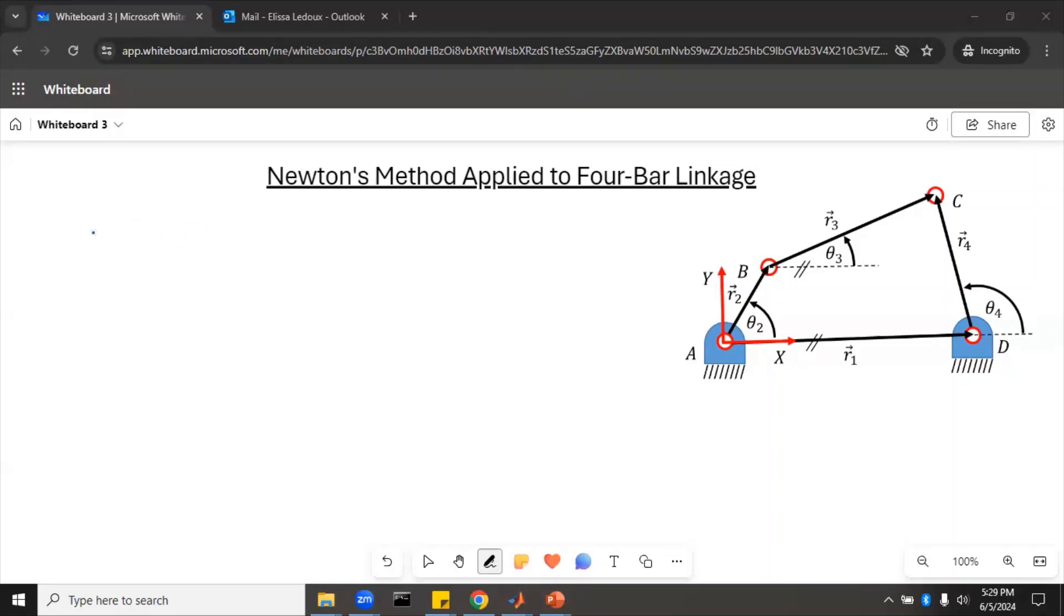So here, if we go around this loop, say we go around the loop clockwise, so just standard convention, we have this one on the left, R2, which is called the input, and then R3 is the coupler, and R4 is the output, and R1 is the ground. And we have our X going along the ground.